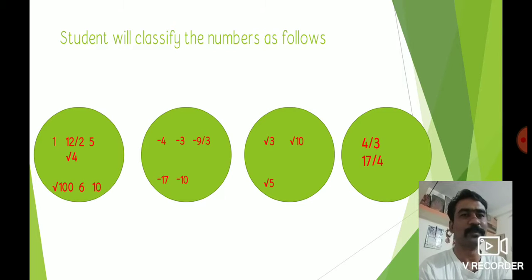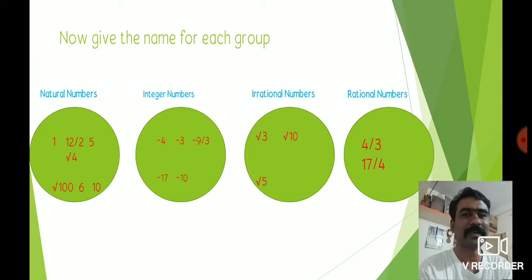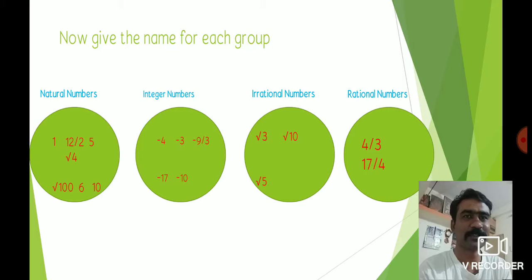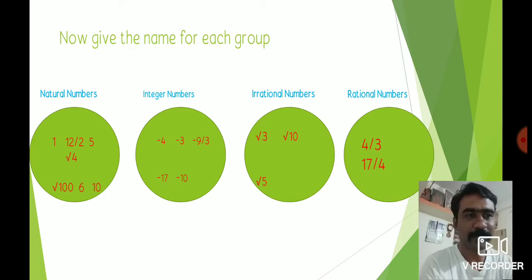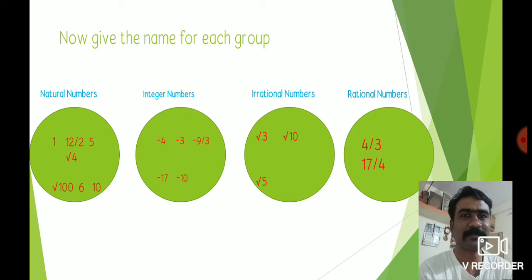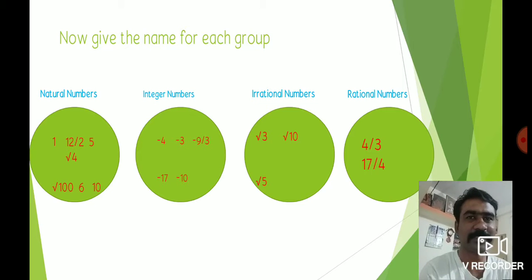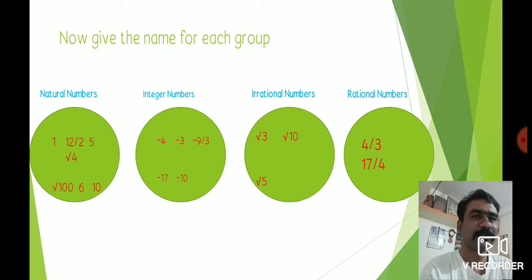Give a name for each group. The 1st group is a group of natural numbers, 2nd group is a group of integers, 3rd group is a group of irrational numbers, and 4th group is a group of rational numbers. In the natural numbers group, 12/2 equals 6, √4 equals 2, and √100 equals 10 — so all are natural numbers. The second group contains all negative integers. The third group has irrational numbers, and the fourth has rational numbers.